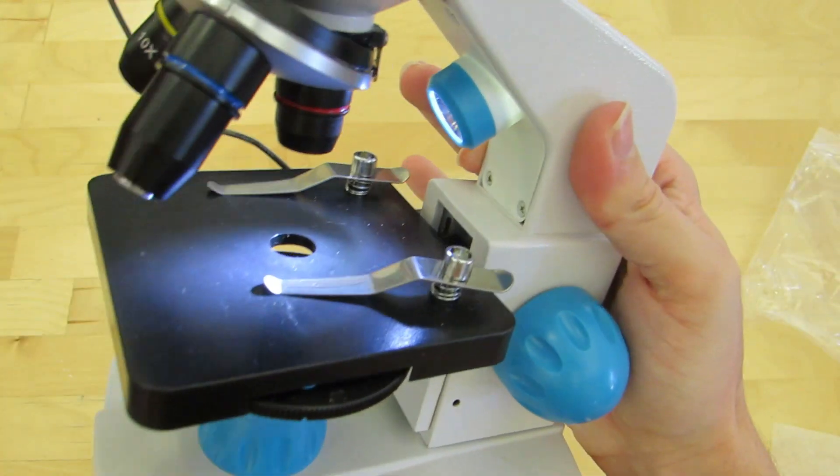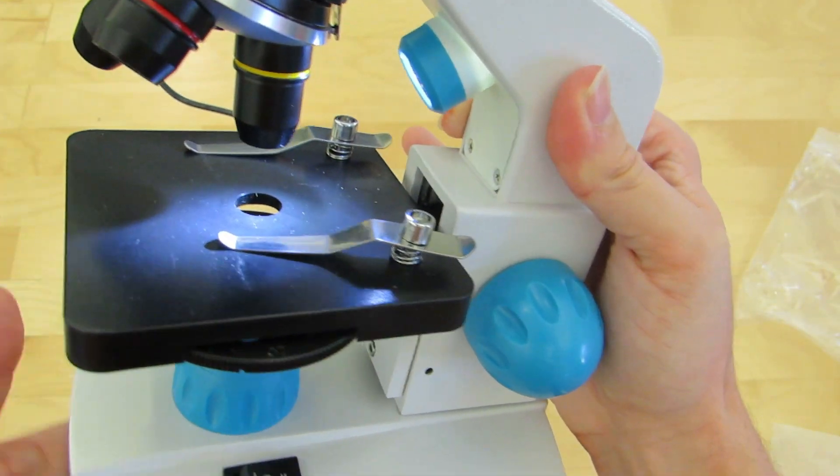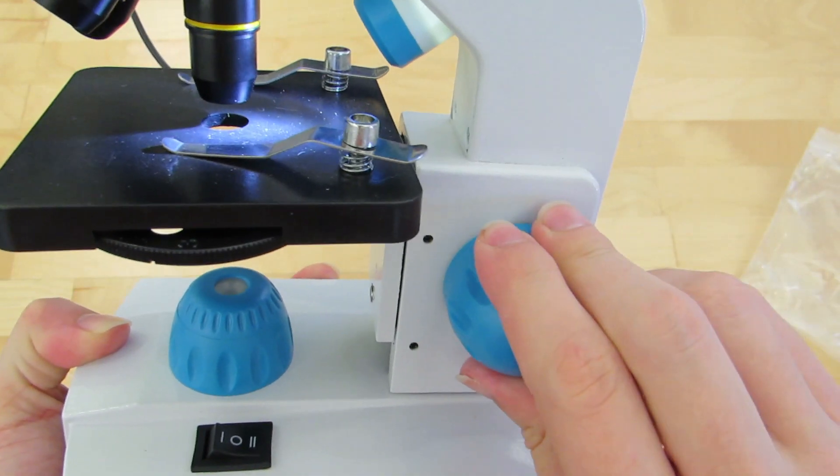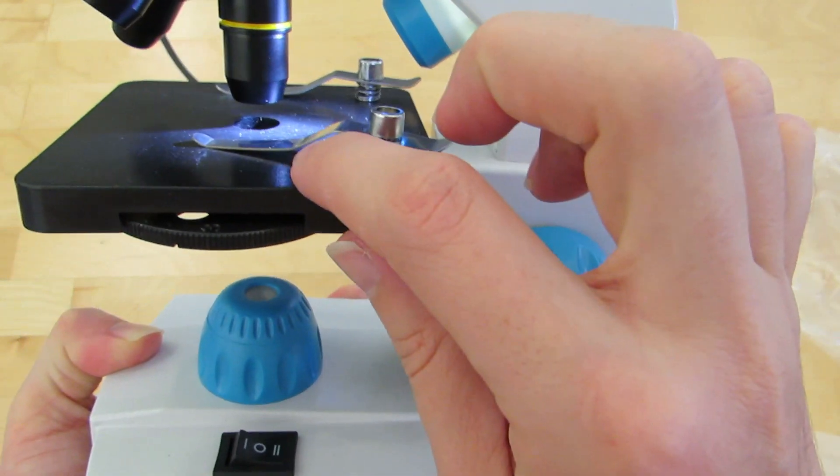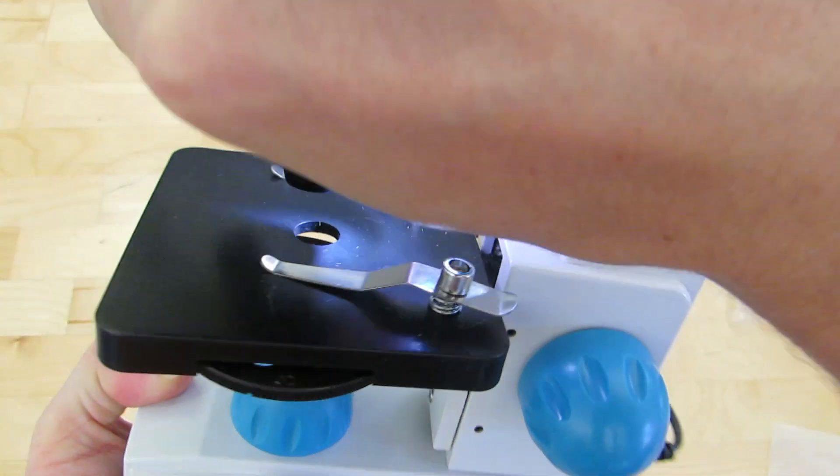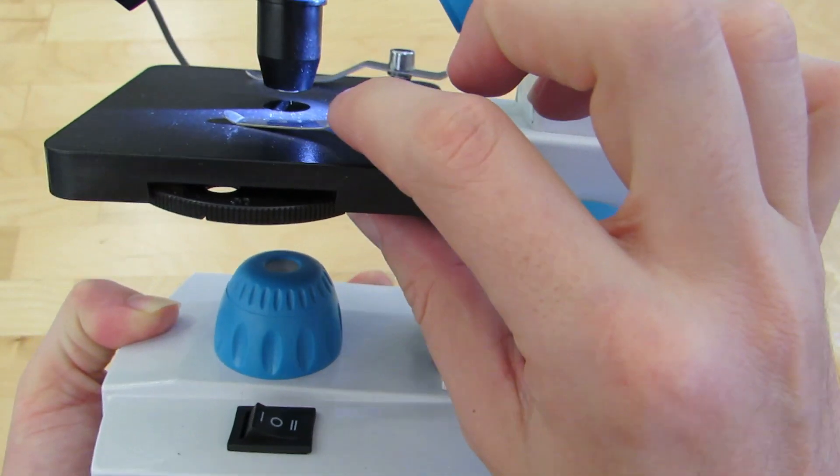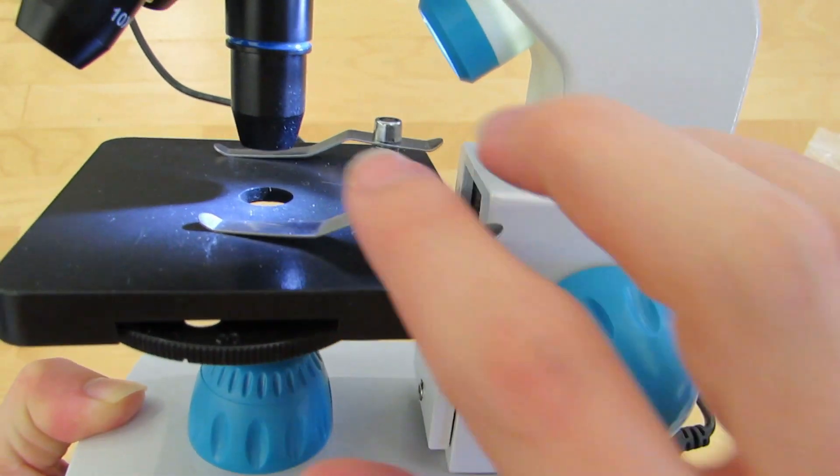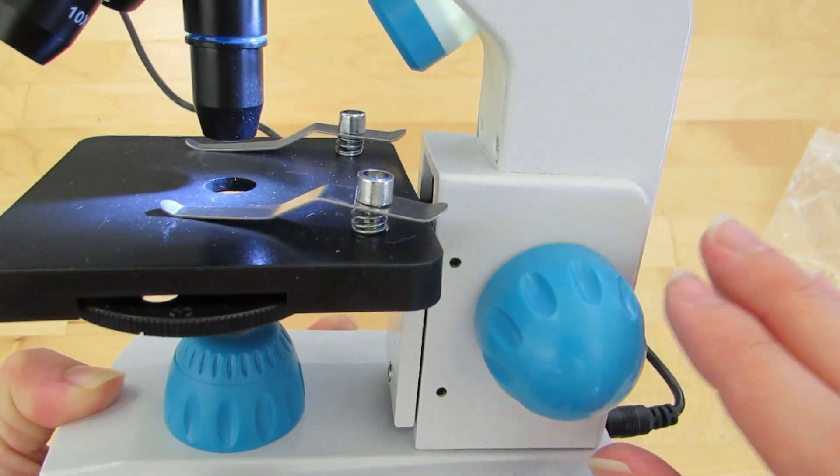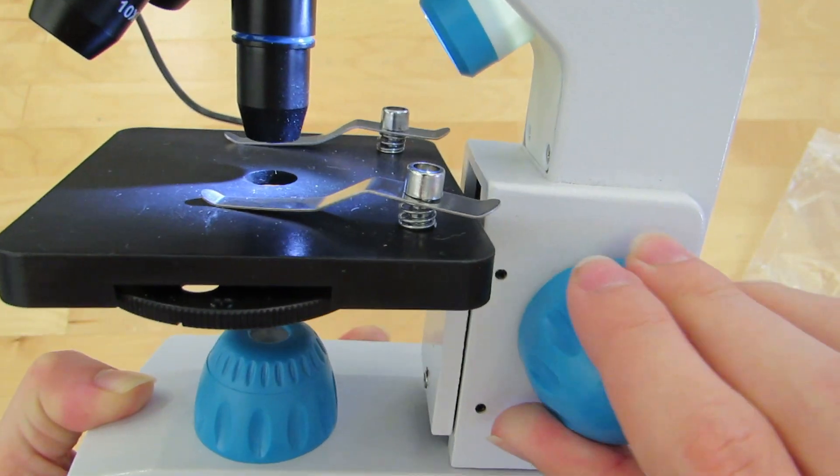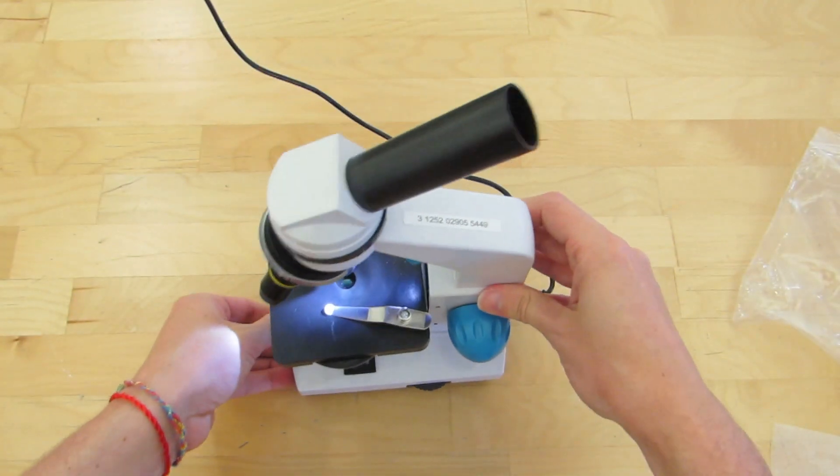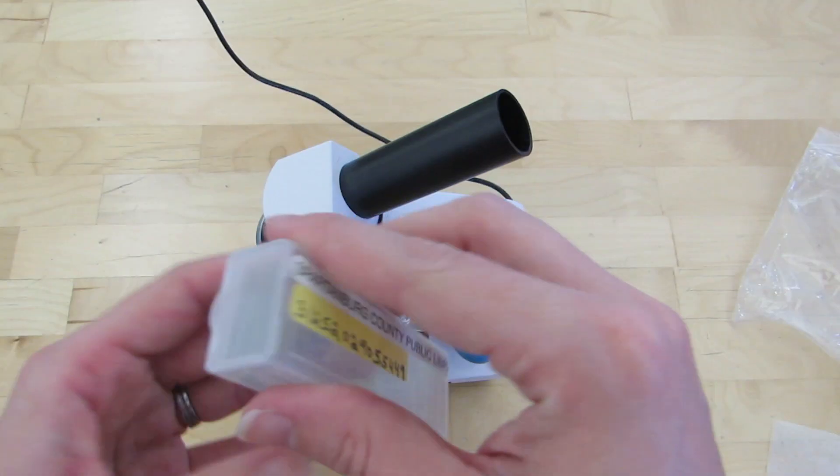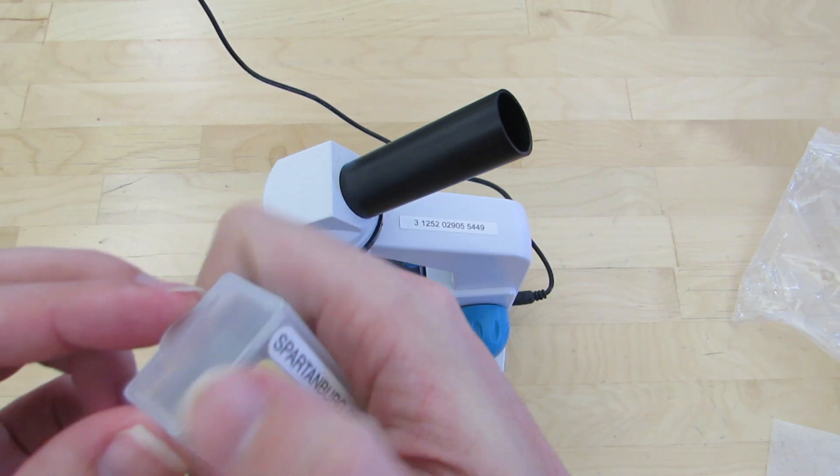So course adjustment knob. These are your different magnifications. It has a two five and ten. So this yellow is the five and you can see how close that gets to the bed. And then this is ten power. Using the course adjustment knob you can break a slide. If you push it all the way to the top it will break through your slide. So just be careful whenever you're using this or your kids are using this, just let them know that if they get too close it will break it. A lot of times when you have problems magnifying things it's because you're too close anyway. So just be aware of that.